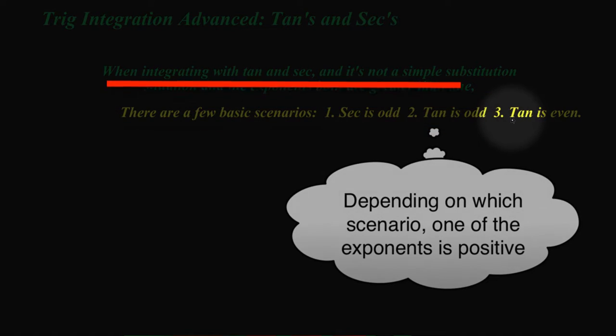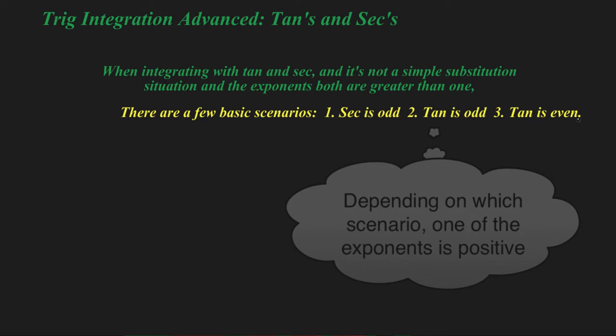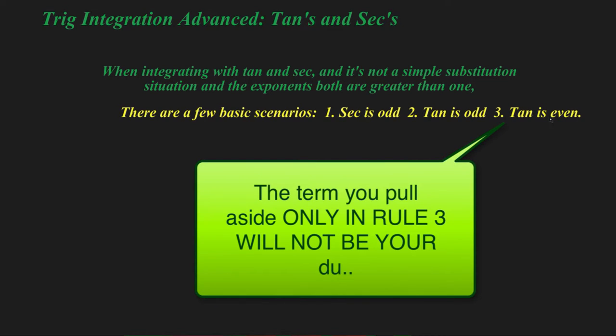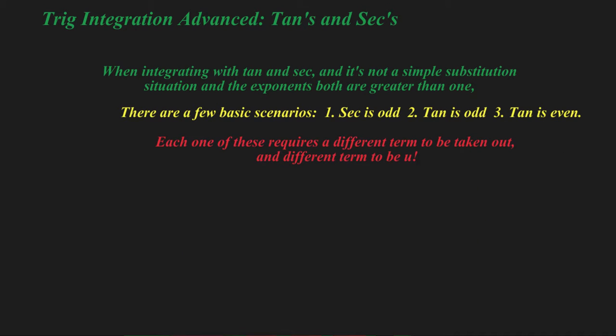Now when tangent is even, it's a slightly different scenario in which what you're pulling out is not going to be your DU in this scenario. Up until now, what you set aside was your DU, but not this one. Again, each of these have their own method, what you take out, and what's going to be your U.